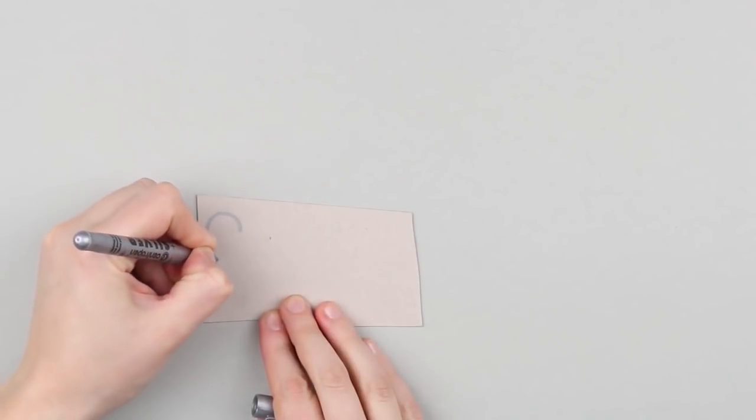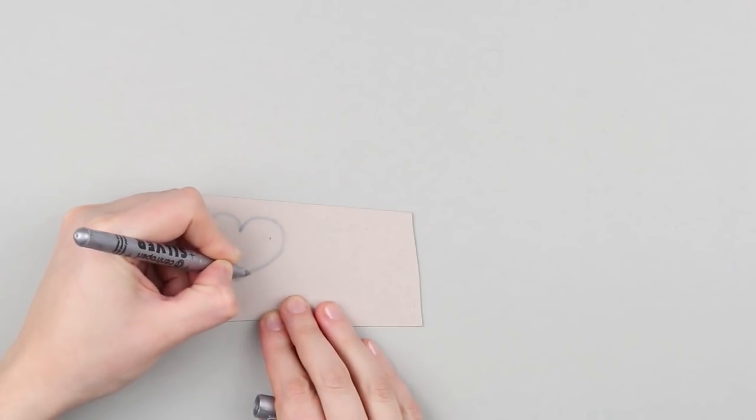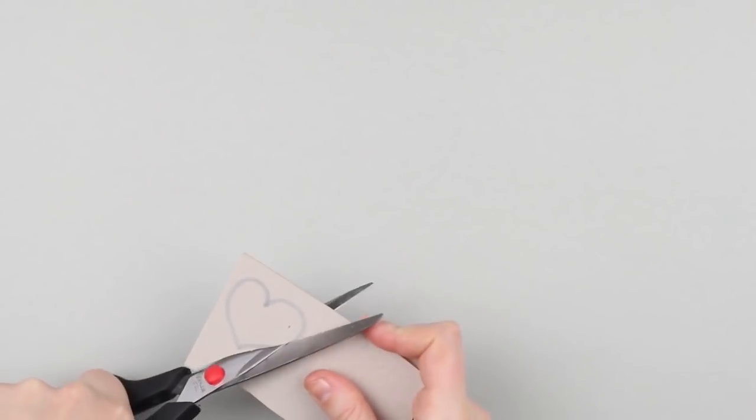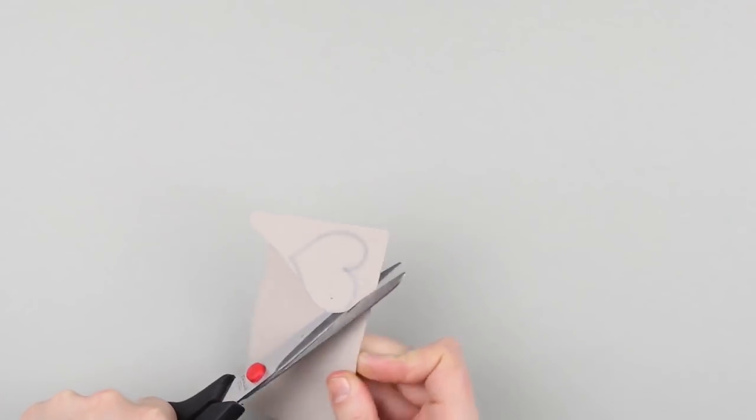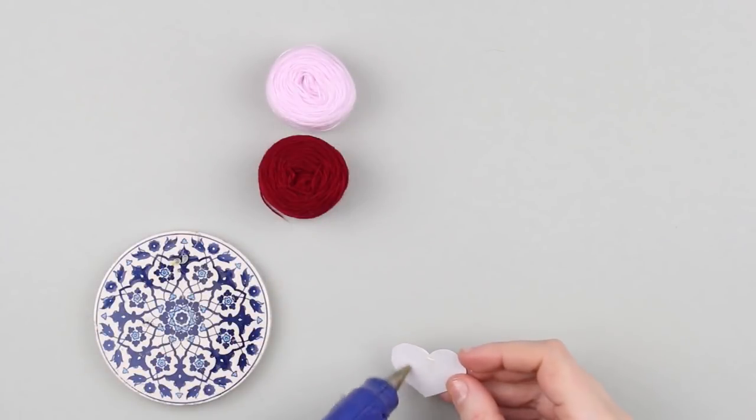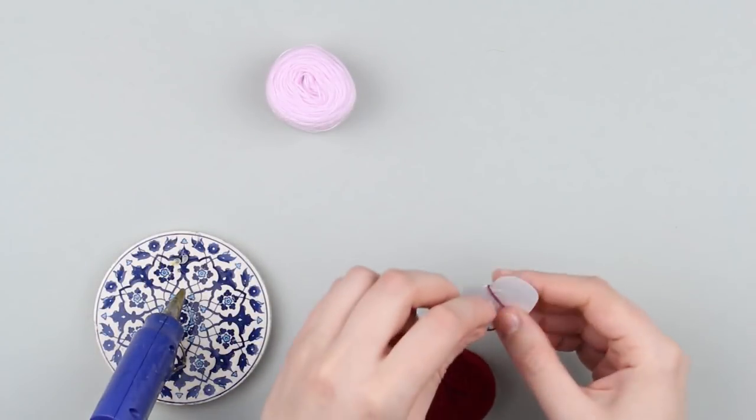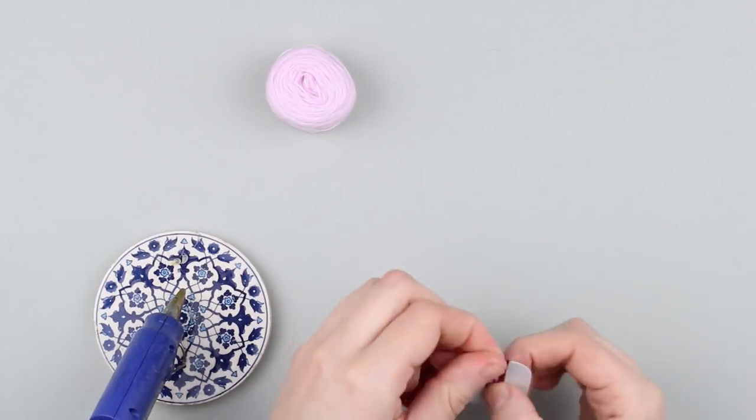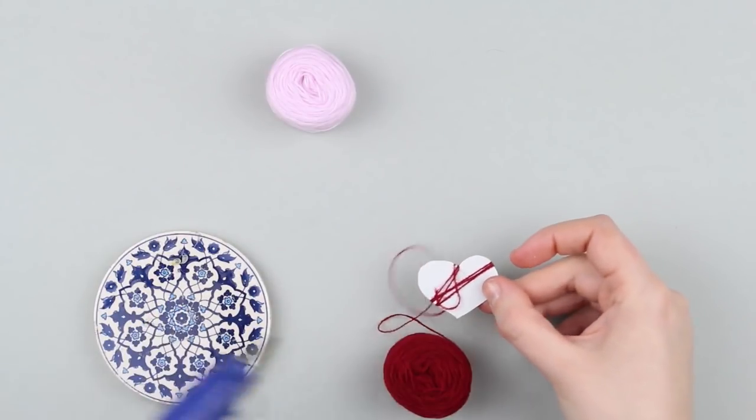Draw a heart on cardboard. It will be an earring base. Cut it out carefully. Add some glue. Attach a yarn end and start wrapping. Add glue if necessary.